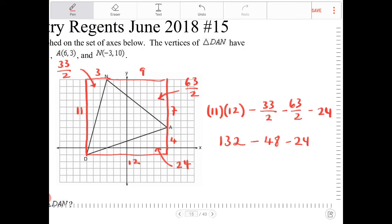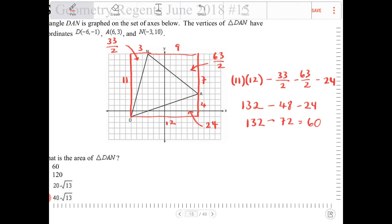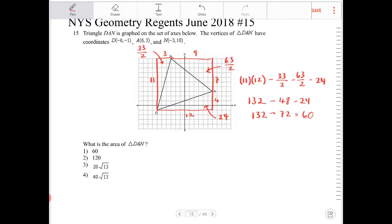48 and 24 together make 72. So if I subtract 132 by 72, I will end up with 60. The area of triangle DAN is going to equal 60, which is option 1. Thank you.